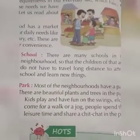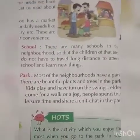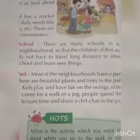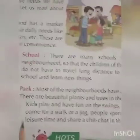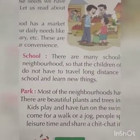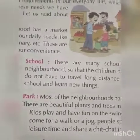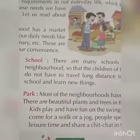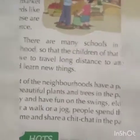Park: most of the neighborhoods have a park. There are beautiful plants and trees in the park. Kids play and have fun on the swings — swings means jhula. Elders come for a walk or a jog. People spend their leisure time — leisure time means the time they get from their busy schedule — and share a chit-chat in the park. Chit-chat means small talk or gossip.